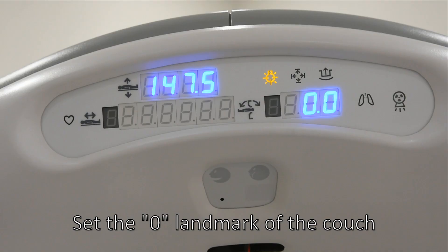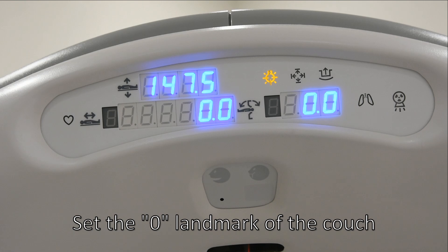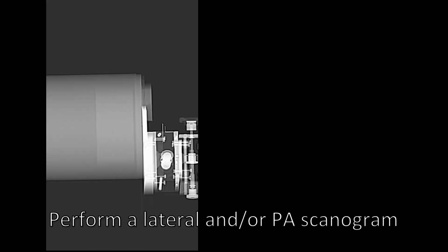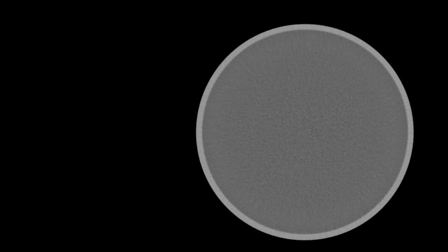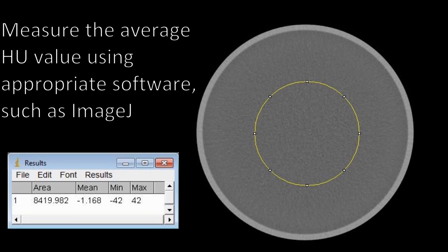Set the zero landmark of the couch. Perform a lateral and or posterior anterior scanogram. Measure the average Hounsfield unit value using appropriate software such as ImageJ.